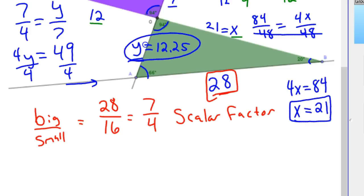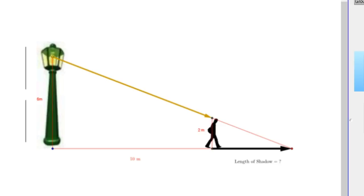And there's those similar triangles. Now I have a couple more examples that we can go with. I always love this one. So we have a lamppost that's 6 meters high. We've got this guy walking that's 2 meters high. You've got 10 meters between the guy and the lamppost.